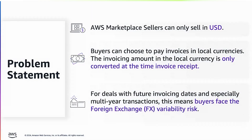Previously, AWS Marketplace sellers could only sell in US dollars. Buyers can choose to pay invoices in local currencies; however, the invoicing amount conversion from USD to local currencies is only visible to the buyer at the time of invoice receipt. For deals with future invoicing dates, and especially multi-year transactions, buyers face the FX variability risk. To address these points of friction, we're rolling out changes in 2024 that I will dive into next.